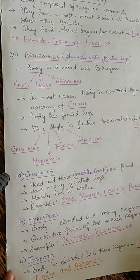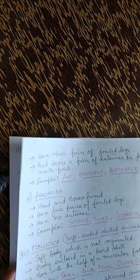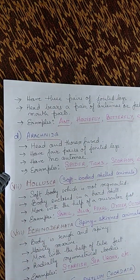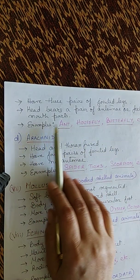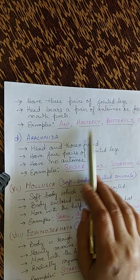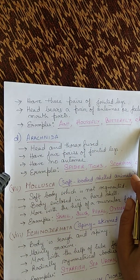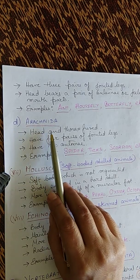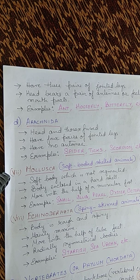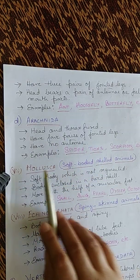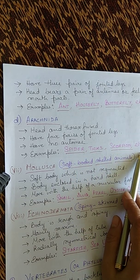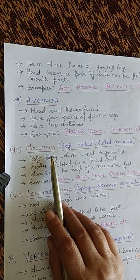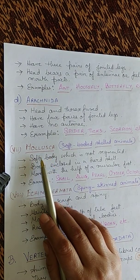Insecta: body divided into three regions — head, thorax, and abdomen — with three pairs of jointed legs. The head bears a pair of antennae or feelers and mouthparts. Examples: housefly, butterfly. Arachnida: head and thorax are fused, similar to Crustacea, with four pairs of jointed legs and no antennae. Examples: spider, ticks, scorpion.